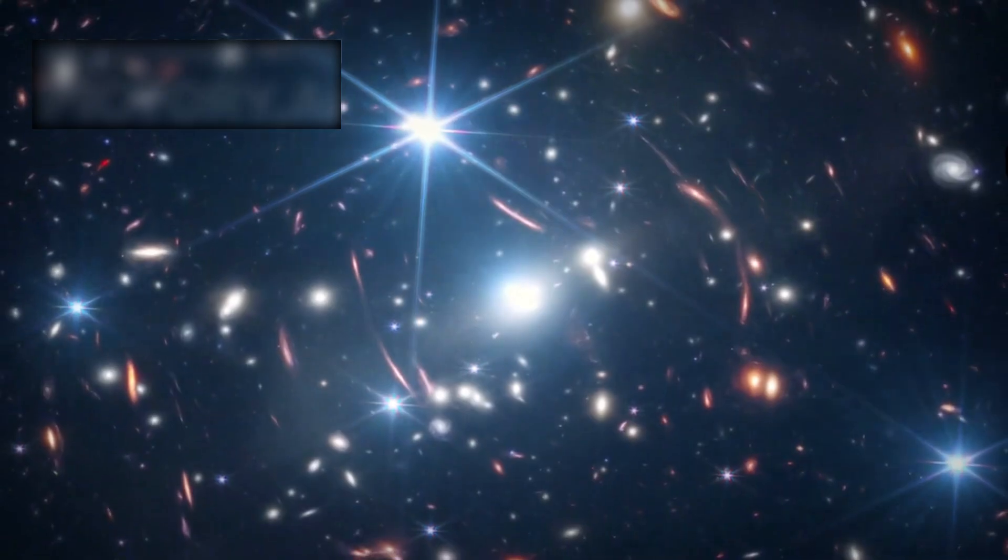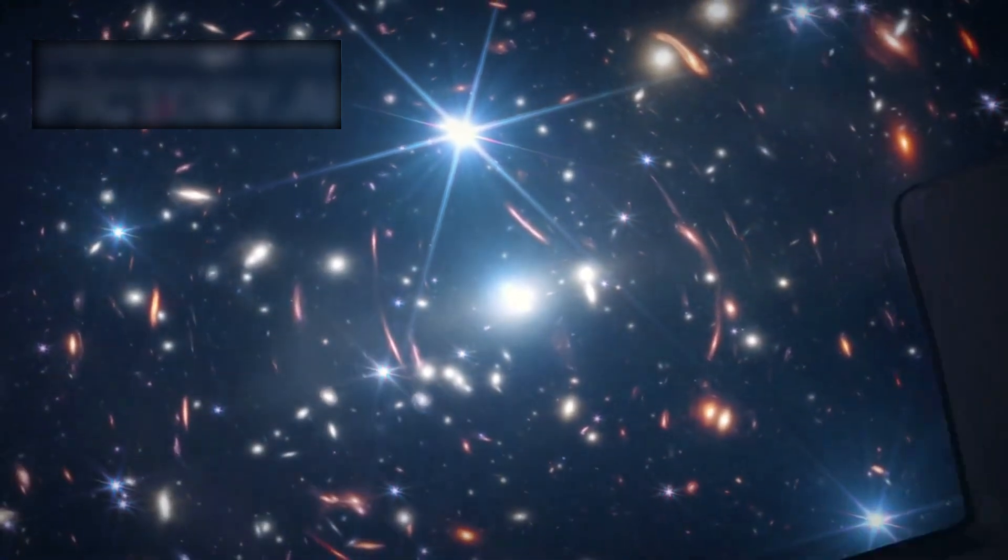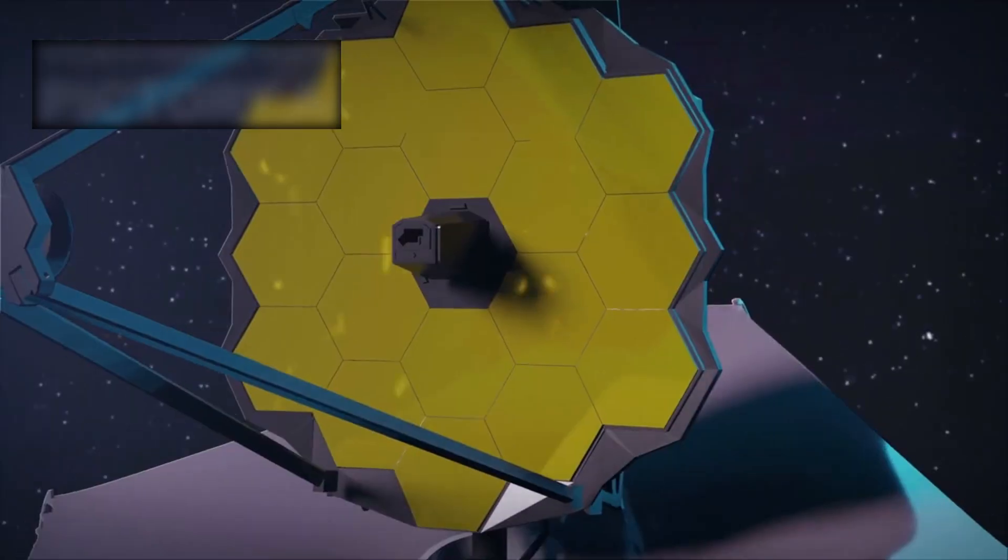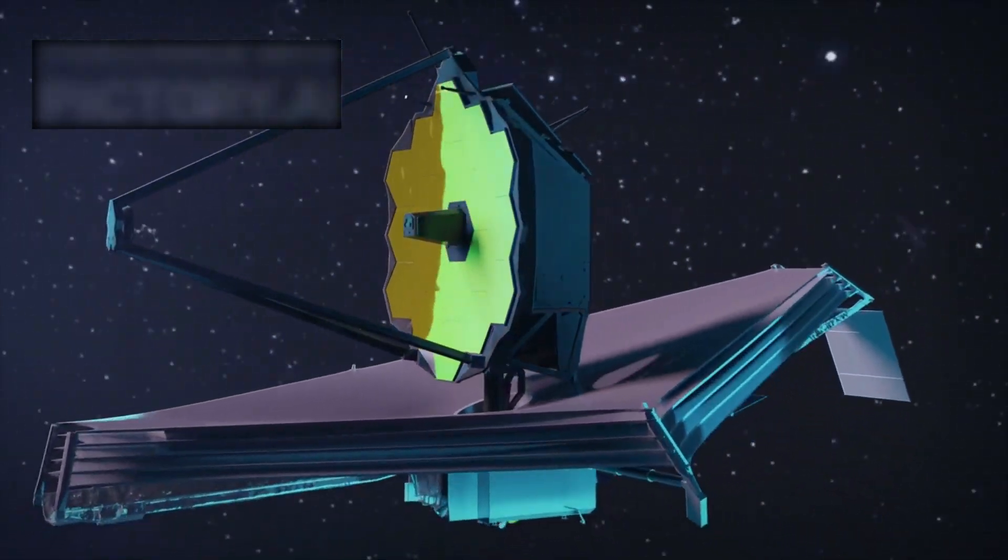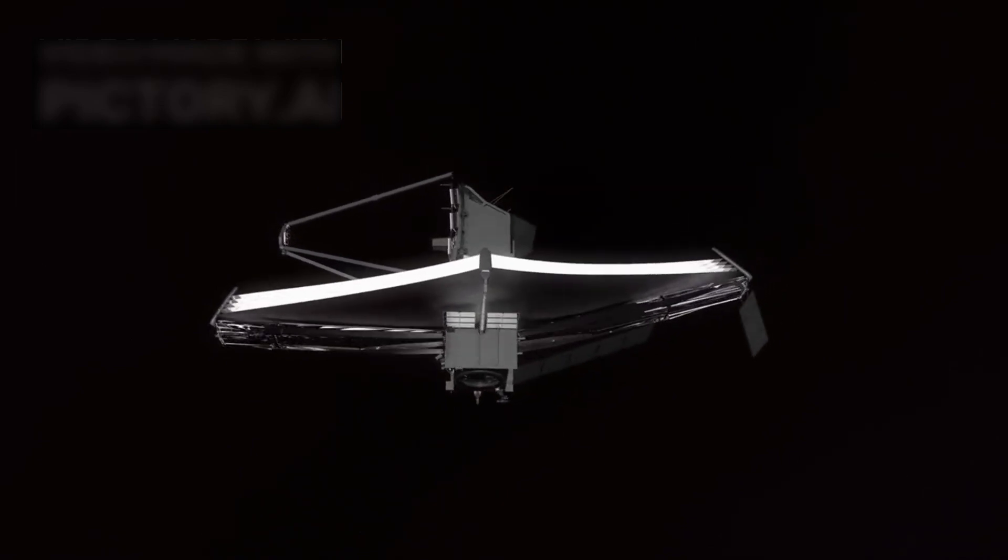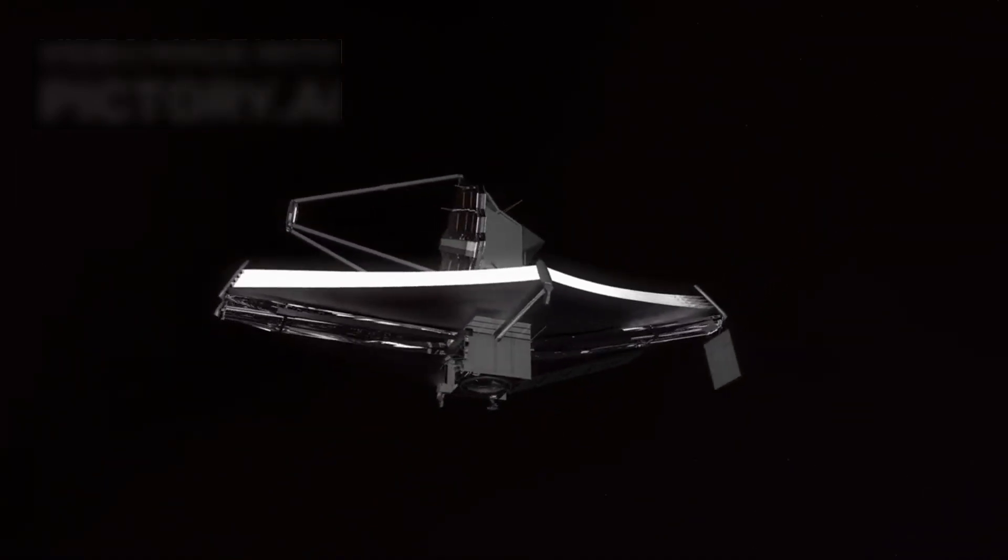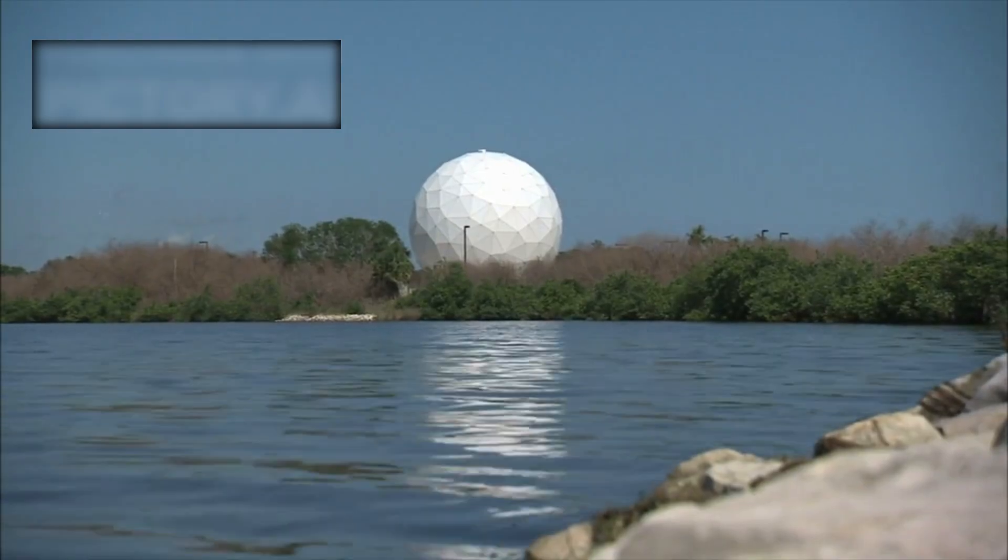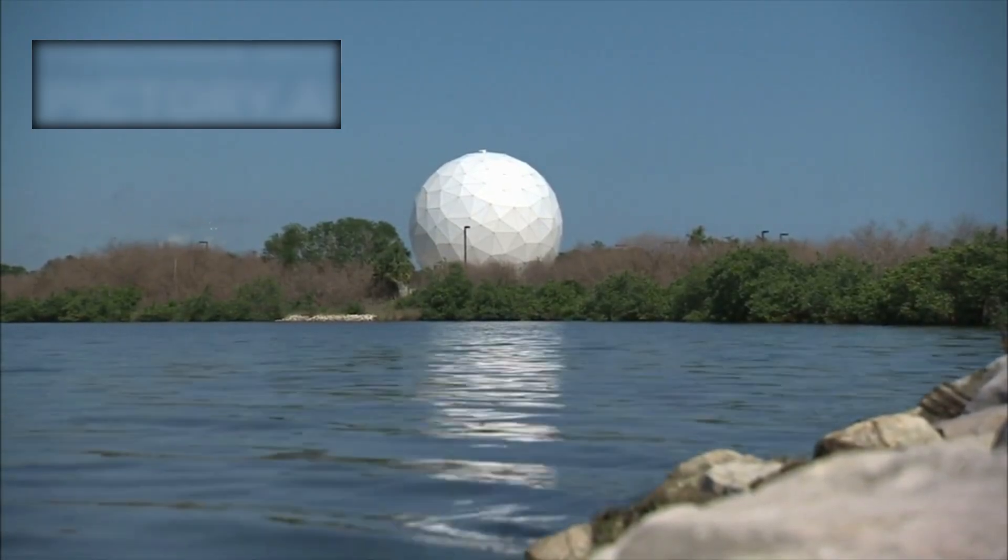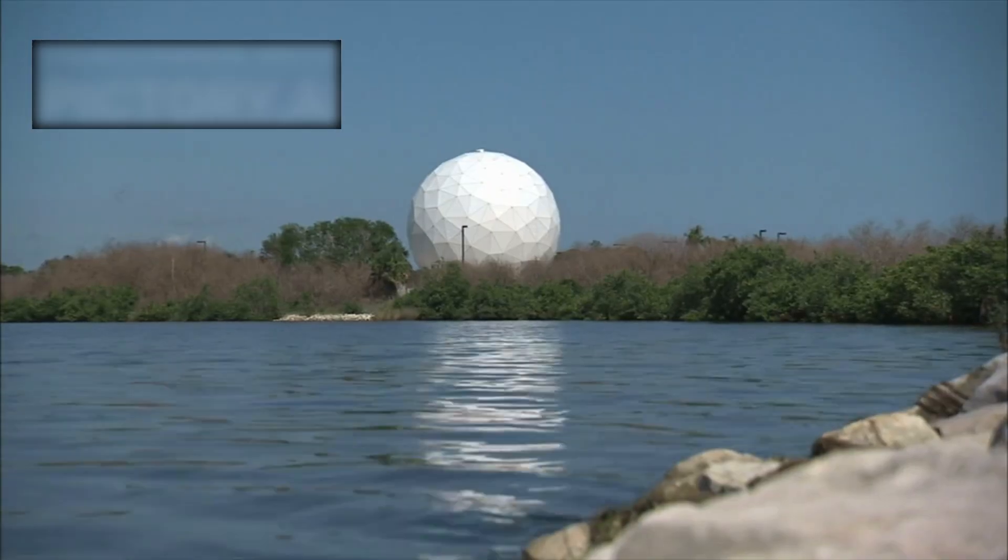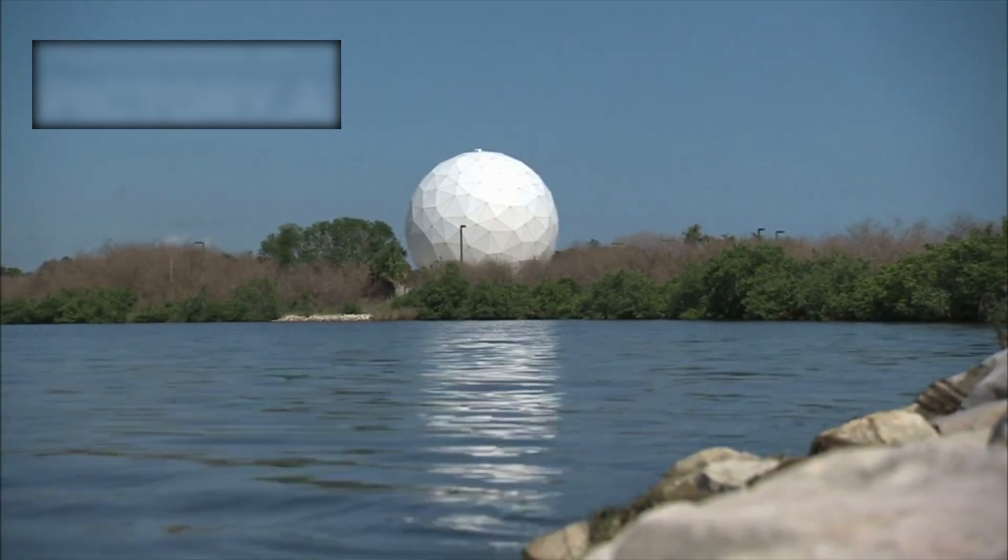The James Webb Space Telescope has been in operation for just over two years, yet its achievements have already justified its staggering $10 billion cost. Built to surpass the Hubble Space Telescope, Webb can peer further and deeper into space than anything before it. Unlike Hubble, which relied on visible and ultraviolet light, Webb is optimized to observe the faint glow of infrared radiation, light stretched to longer wavelengths as it travels across the ever-expanding universe.